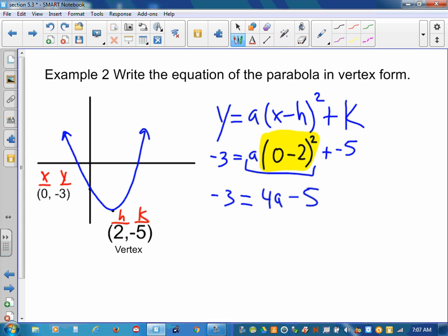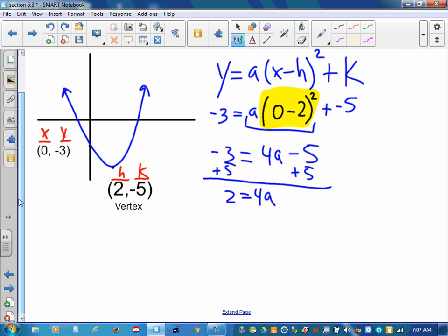Continuing from here, simple steps. Adding five. We get two is equal to four a. I slide my screen down a little bit. Divide by four. And that would be a half. So a equals one half.